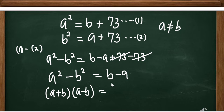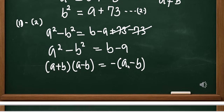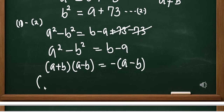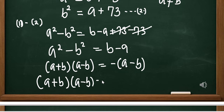And on the right-hand side, you can factor out a negative sign, giving A minus B. From here, don't divide. What we're going to do is move the right-hand side to the left-hand side. So here I'm going to have A plus B, A minus B, plus A minus B equals 0.